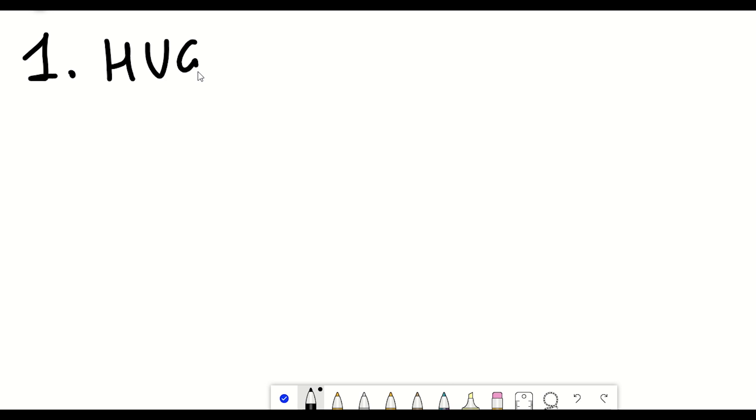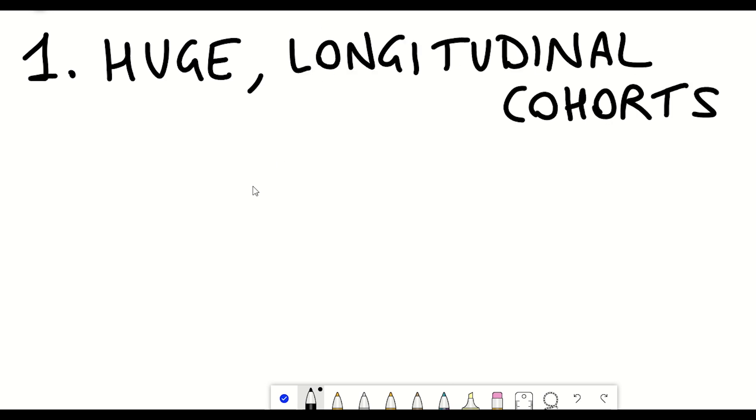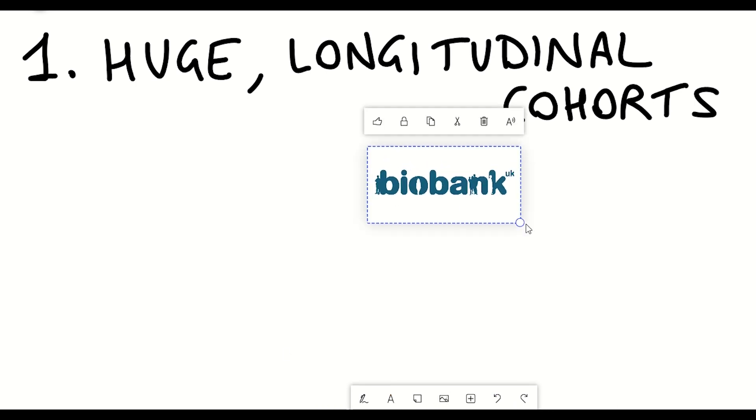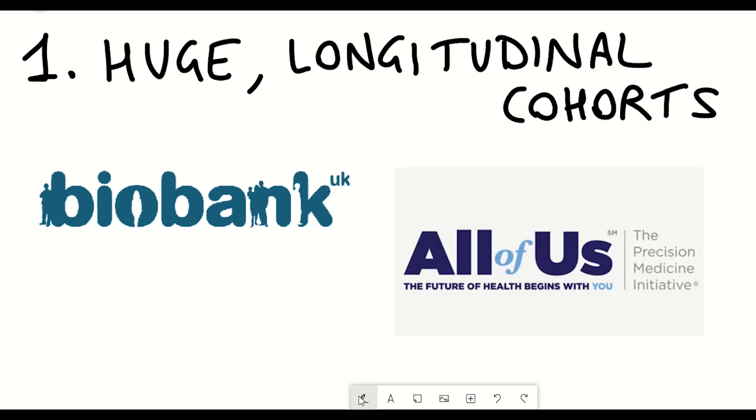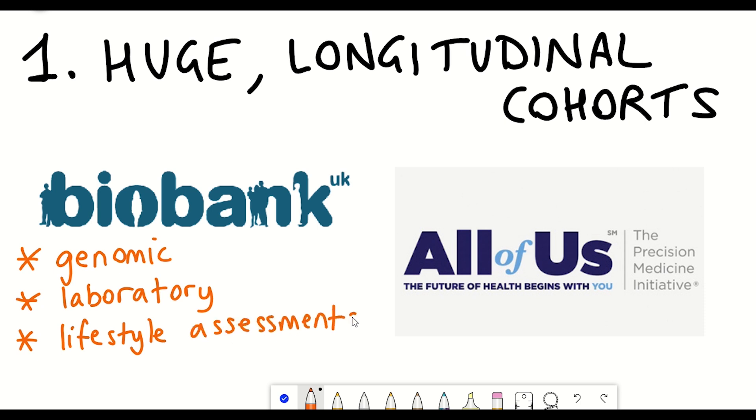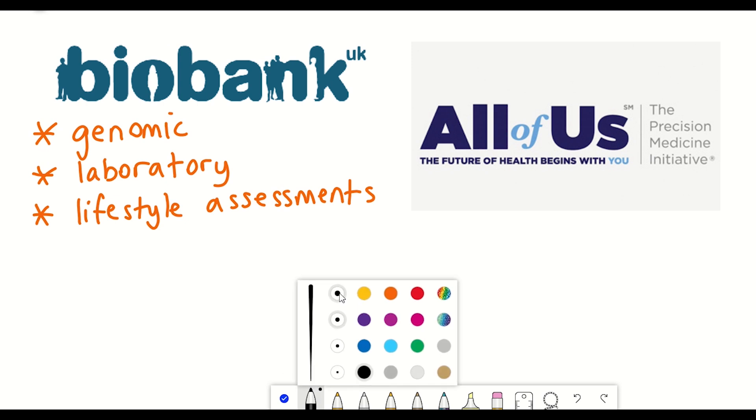The first opportunity are the development of huge longitudinal cohorts. And so this is to build upon the work that's already been conducted over the last two decades, including national cohorts, such as the UK Biobank, and the All of Us research programme that have generated these huge populations with genomic laboratory and lifestyle assessments, as well as longitudinal follow ups on health outcomes. And so basically, there's already a wealth of information that's already out there.